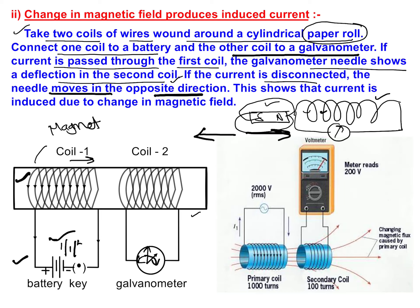If there is no current, the needle moves in the opposite direction — this coil will no longer work as a magnet.